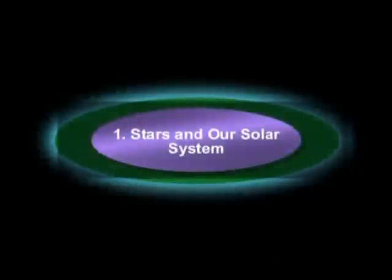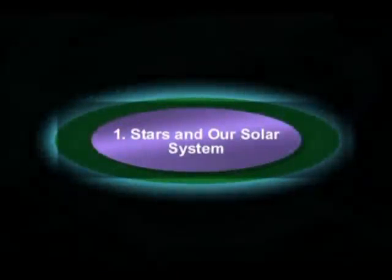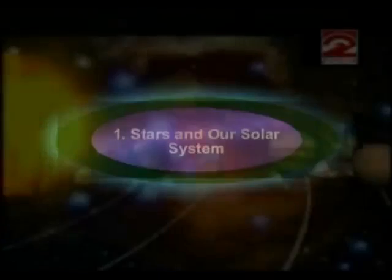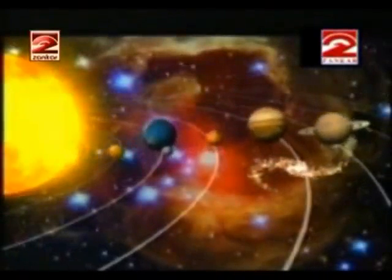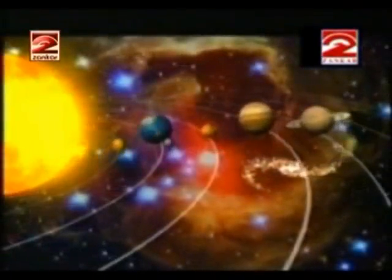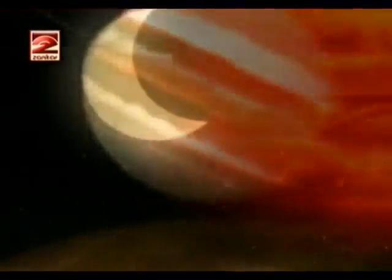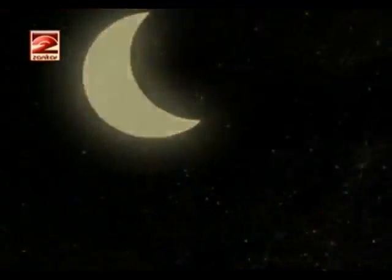Lesson one: Stars and our solar system. Do you know what is meant by celestial bodies? The Sun, planets, moon, stars — these are all celestial or heavenly bodies. You all know that the Sun is a star and the eight planets including the Earth revolve around it in different orbits.